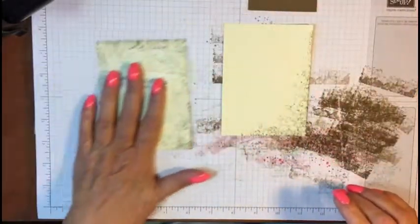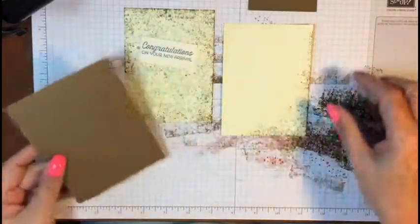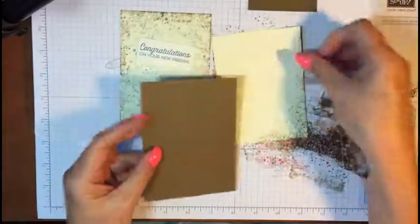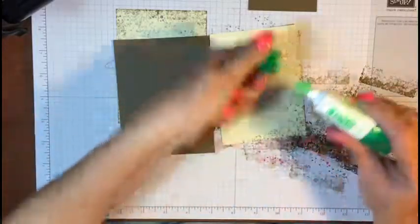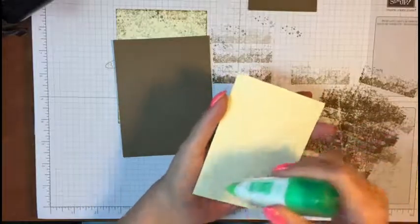That's all the stamping. All we gotta do is just build the card. Told you this is really simple. Here we go. What we're gonna do is I like to use the Tombow glue because I never get it straight with the fast fuse or tape runners.